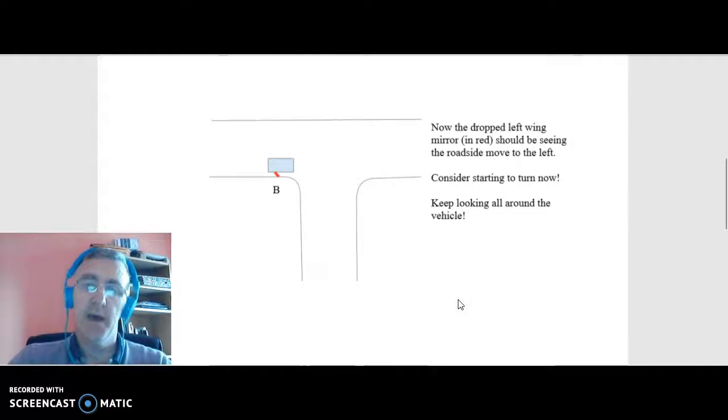Now secondly, with the left wing mirror dropped down, as you start to reverse along the roadside you'll come to a point then where in the left wing mirror, here marked in red, you'll see the roadside beginning to move away to your left. When you see the curb starting to move away in the wing mirror, that's a good time to consider to start turning the car. And obviously then when you're turning the car, you'll be turning steering anti-clockwise to come around the corner initially.